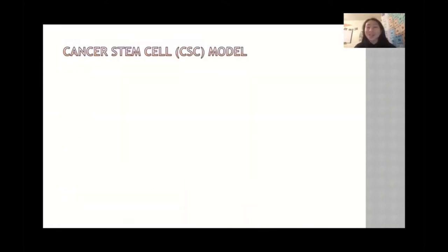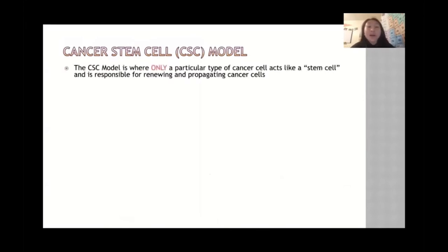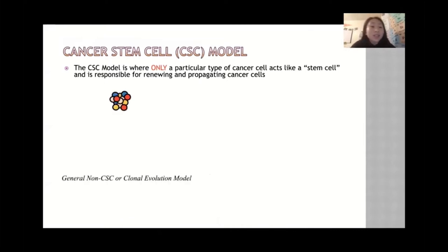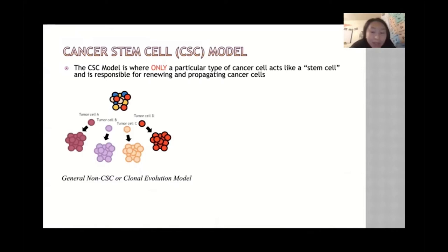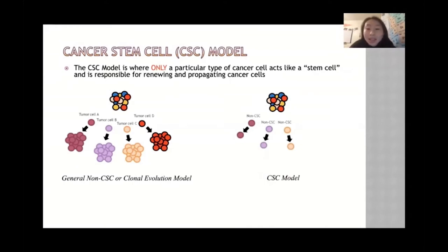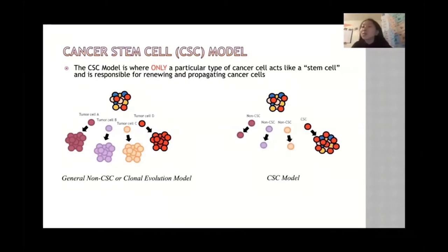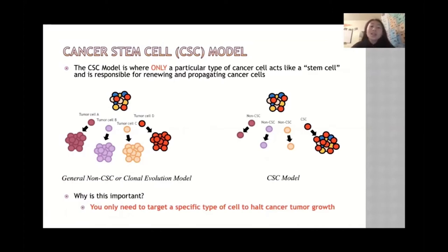The cancer stem cell model is where only a particular type of cancer cell acts like a stem cell and is responsible for renewing and propagating cancer cells. In the non-cancer stem cell model, all tumor cells propagate equally. In the cancer stem cell model, non-cancer stem cells are not really propagating, but the cancer stem cell is propagating a lot and responsible for most tumor growth. This is important because you only need to target the cancer stem cell to halt cancer tumor growth.